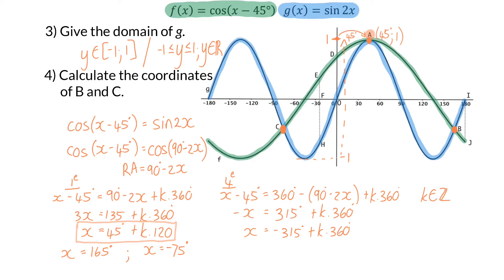One by one, I can now substitute these two x values back into either of the two equations to determine the corresponding y values. And for both of them, that will work out to be minus a half. So B will be the coordinate 165 and minus a half, and C will be the coordinate minus 75 and minus a half.